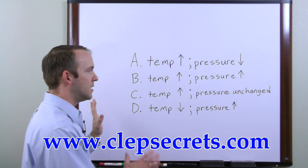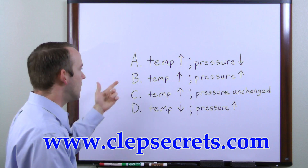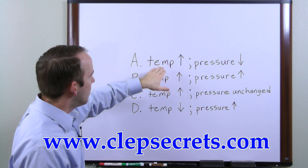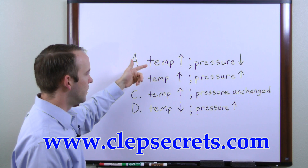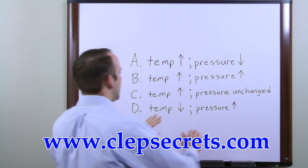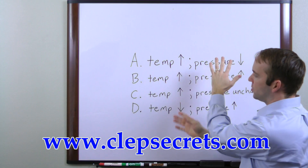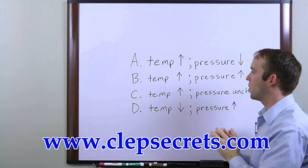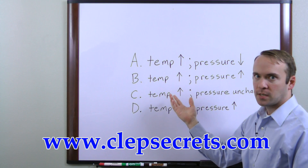Let me show you another way, again just focused on the answer choices, that you can come to the same answer. If we look at these, three of the answer choices have temperature going up and one of them has temperature going down. So if we only consider temperature, we would say that odds are the correct answer is probably one of the choices that has temperature on the increase.